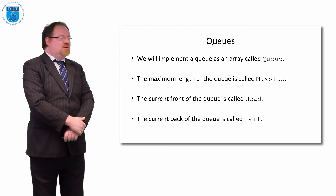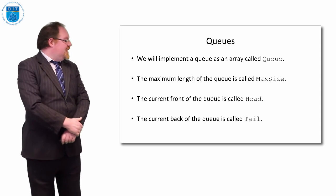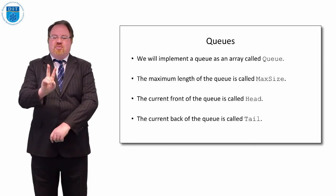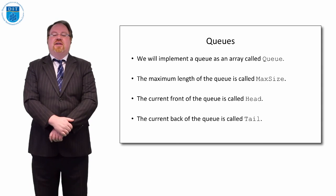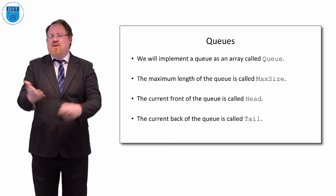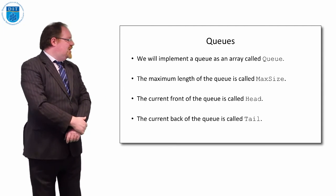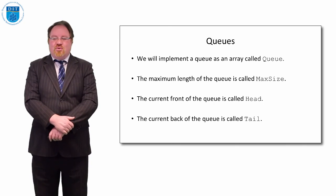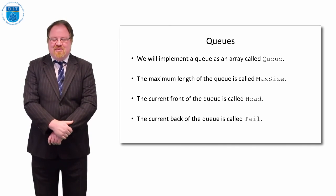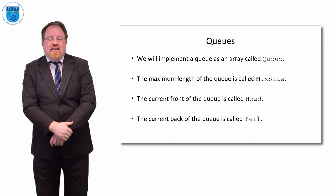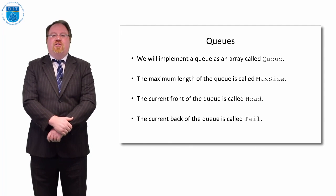To implement a queue using an array, we create an array called 'queue', a maximum length called 'max size', and unlike a stack where we only have one pointer (stack top), we need two pointers: one called 'head' to represent the front of the queue, and one called 'tail' to represent the back. We could name these variables anything — but we give them sensible names so we can understand exactly what's going on. Variable names have no special meaning; we just want good names that help explain what's happening.